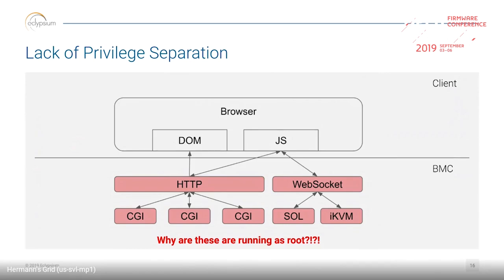Why is that bad? Most BMCs run everything as root. The HTTP server is running as root, the CGIs are running as root — there is no reason for this. The IoT world is better at building privilege separation than this. There is no defense in depth. If I can get one foothold into any process running any CGI script, I have full access to the BMC.